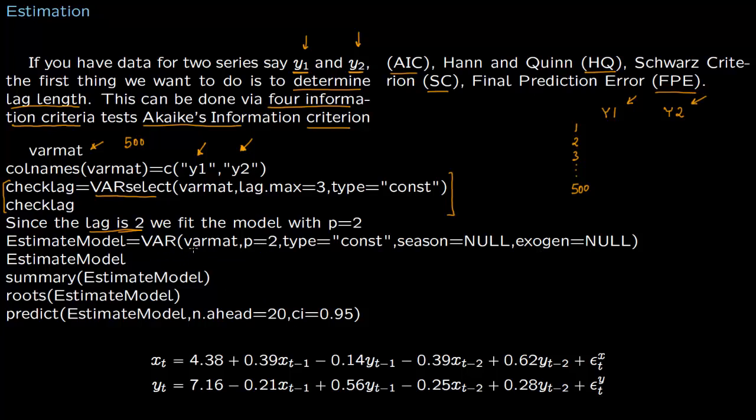We are going to estimate the model. The input matrix is this VAR matrix, which is 500 by 2 matrix. P is two, the number of lags is two, and we have already taken out the seasonality. So this is the model and then we're going to estimate the model.